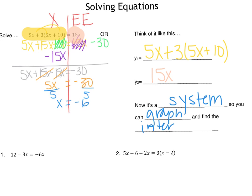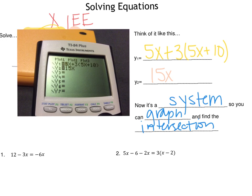Go ahead and open your calculators, turn them on, and go to y equals. In y1, type 5x plus 3 times the quantity 5x plus 10. In y2, type 15x. Make sure you're in y equals — in y1 you should have 5x plus 3 times the quantity 5x plus 10, and in y2 you should have 15x. Then we're going to get ready to graph.